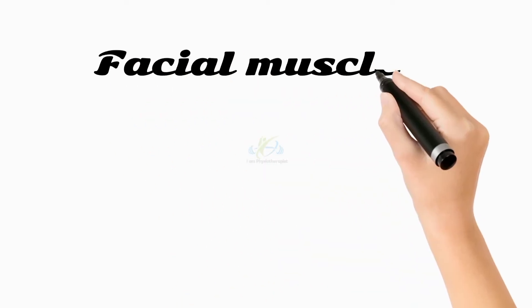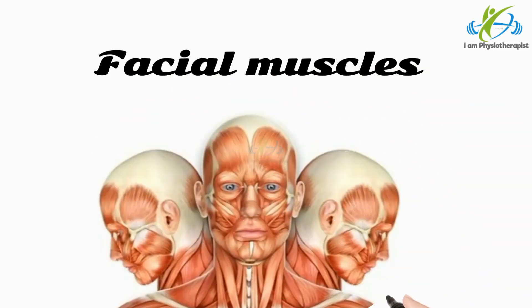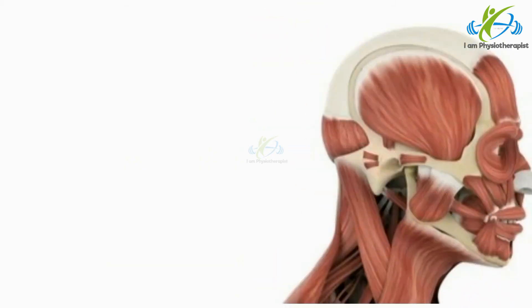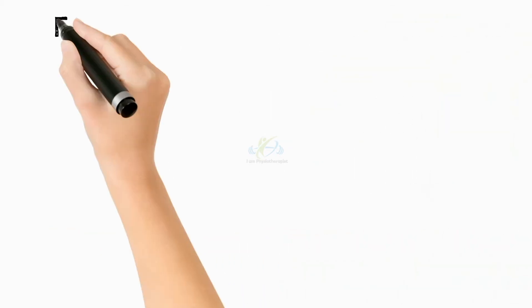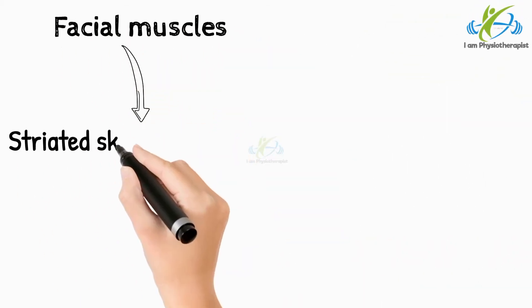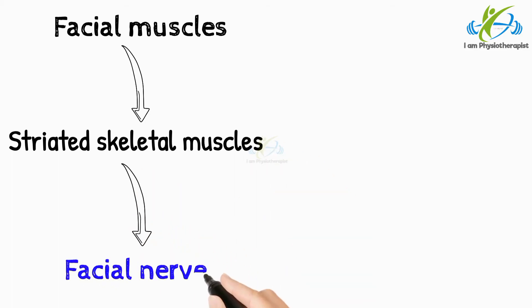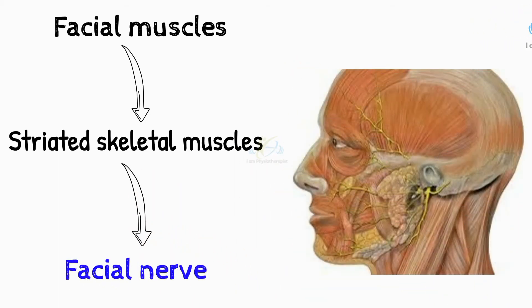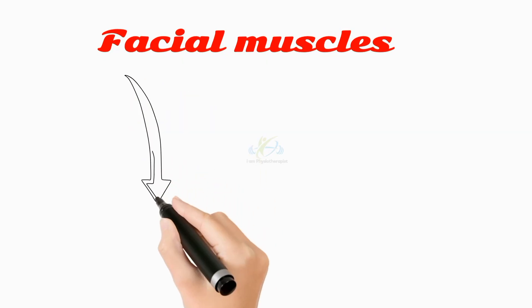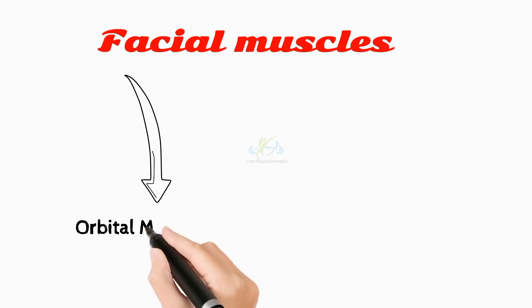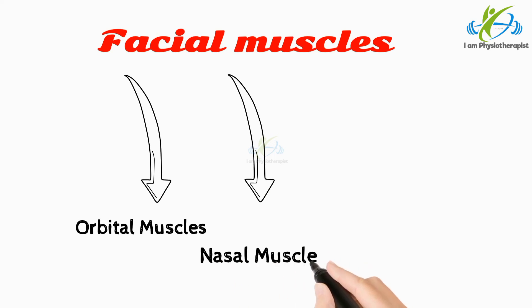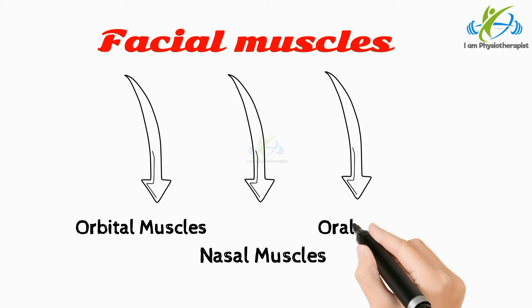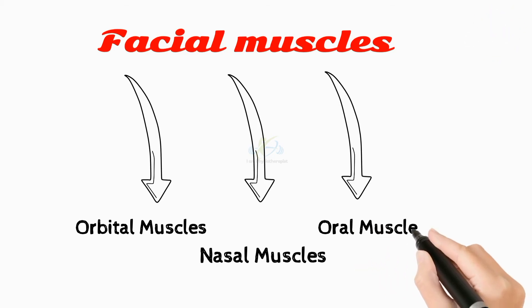Easy mnemonics to learn facial muscles. The facial muscles, also known as craniofacial muscles, are a group of striated skeletal muscles supplied by the facial nerve. The facial muscles can be divided into three groups: Number 1, Orbital facial muscles; Number 2, Nasal facial muscles; Number 3, Oral facial muscles.